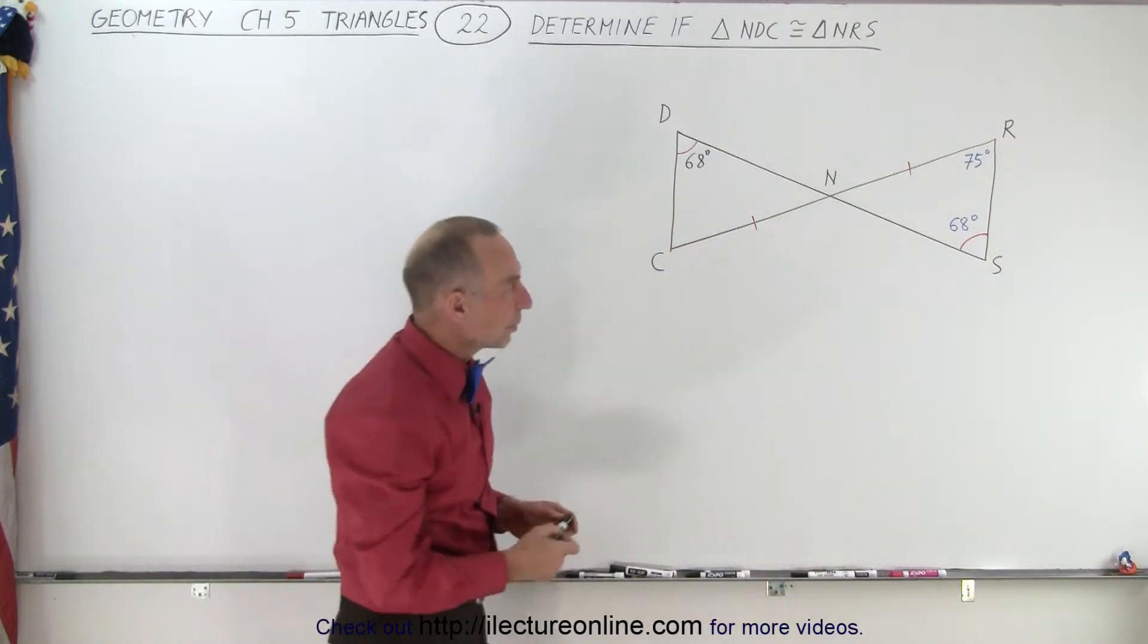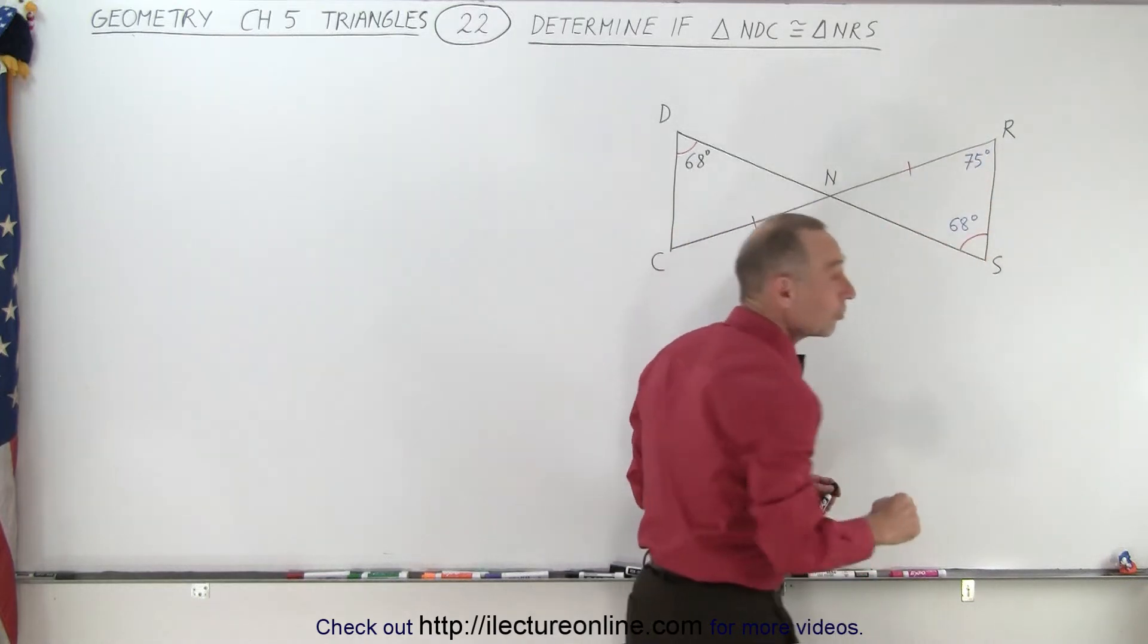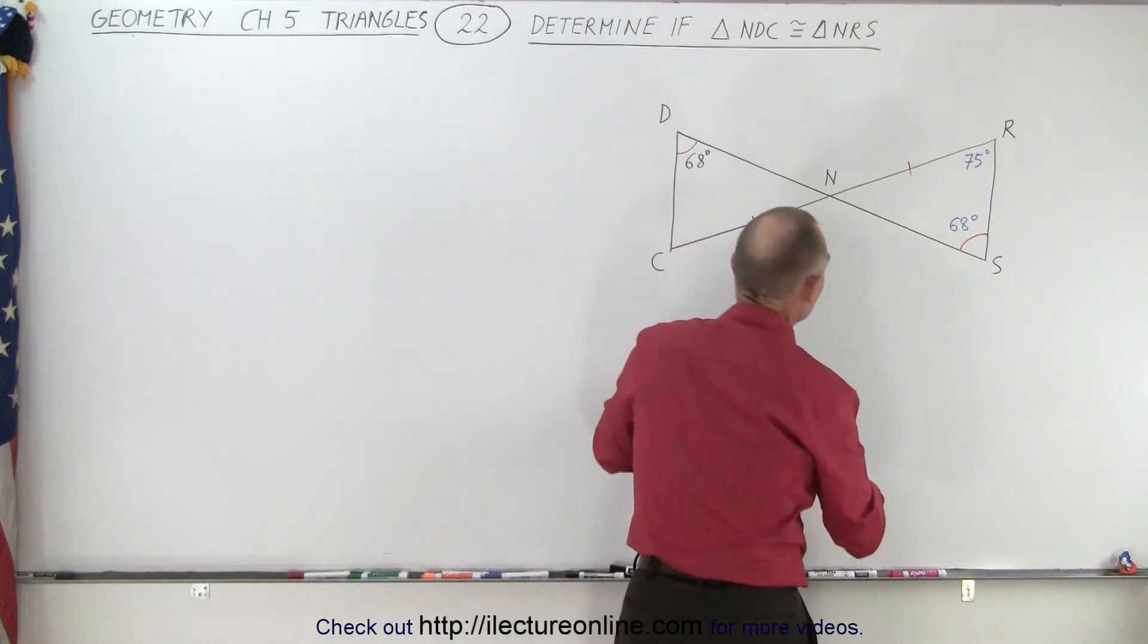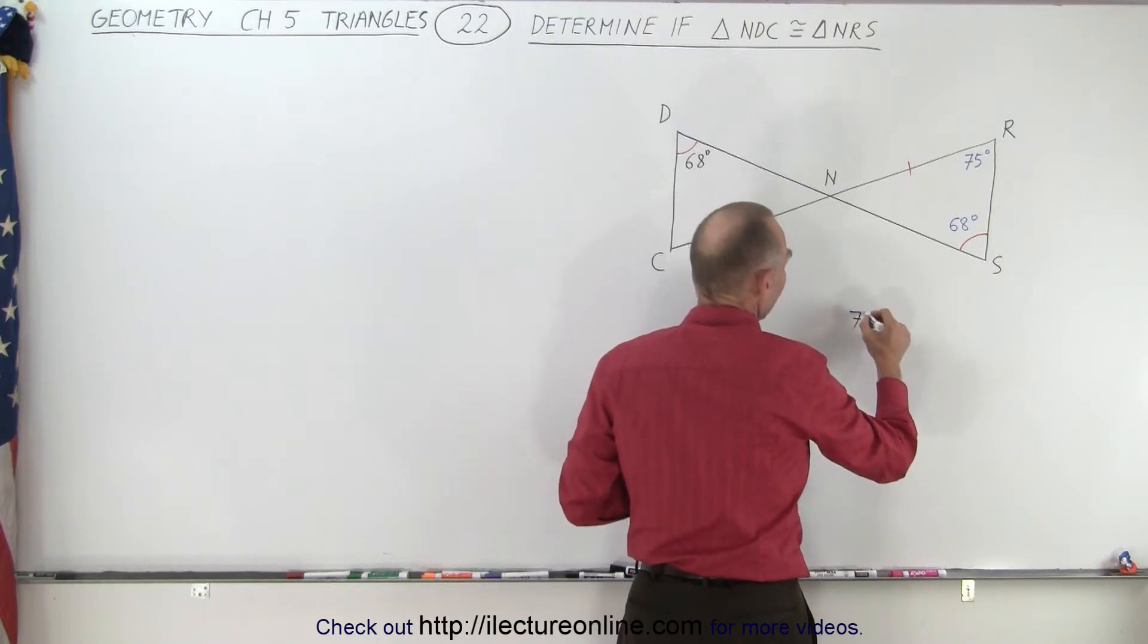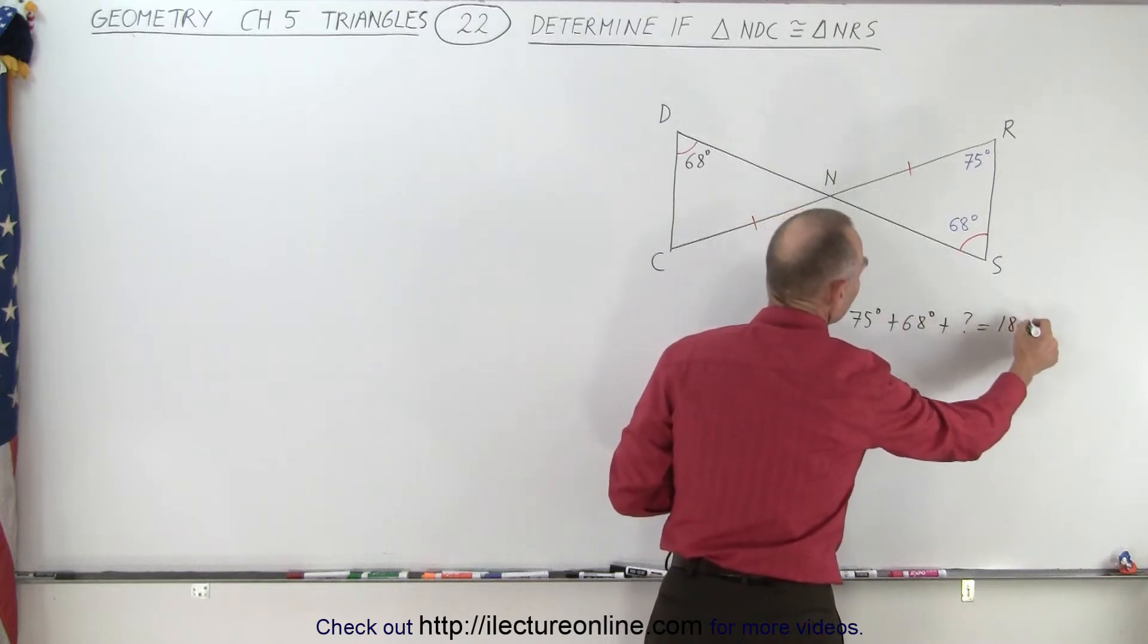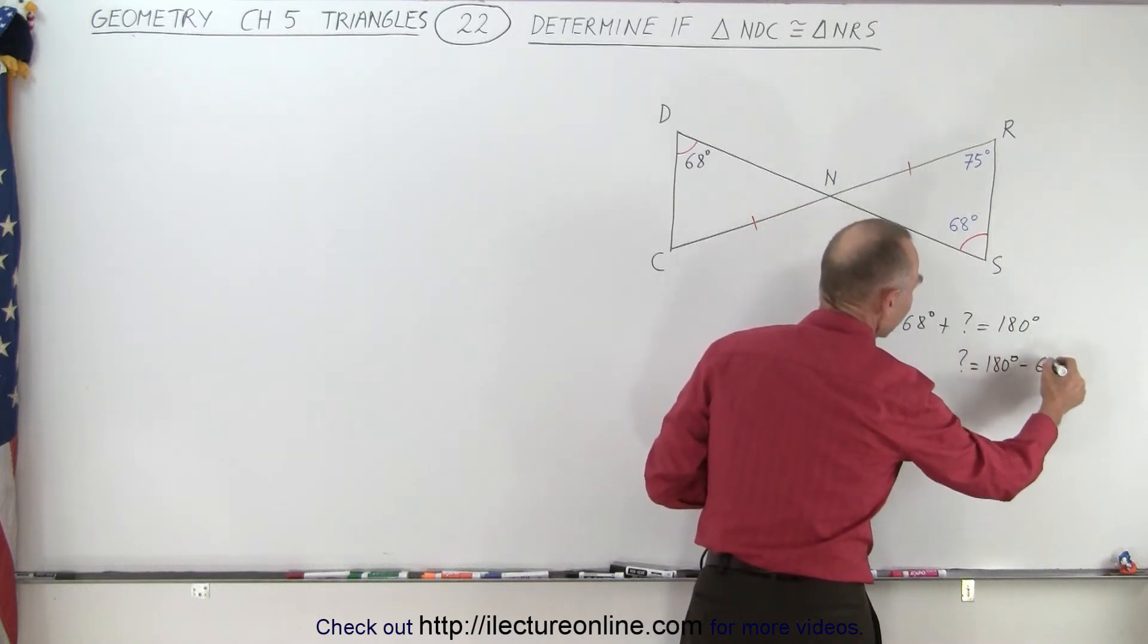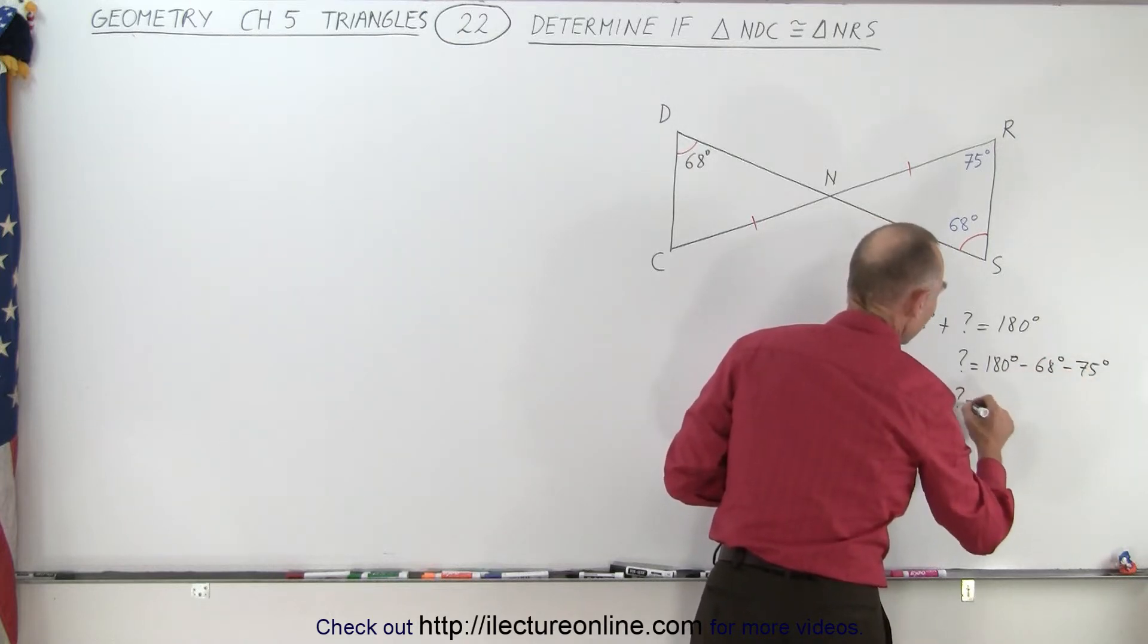Now, since we're dealing with triangles, and in this particular case for the NRS triangle, they give us two of the three angles, we should be able to find the third angle because we know that the sum of all three angles must add up to 180 degrees. So this angle right here is the unknown angle. We say that 75 degrees plus 68 degrees plus the unknown angle adds up to 180 degrees. Therefore, the unknown angle is equal to 180 degrees minus 68 degrees minus 75 degrees.